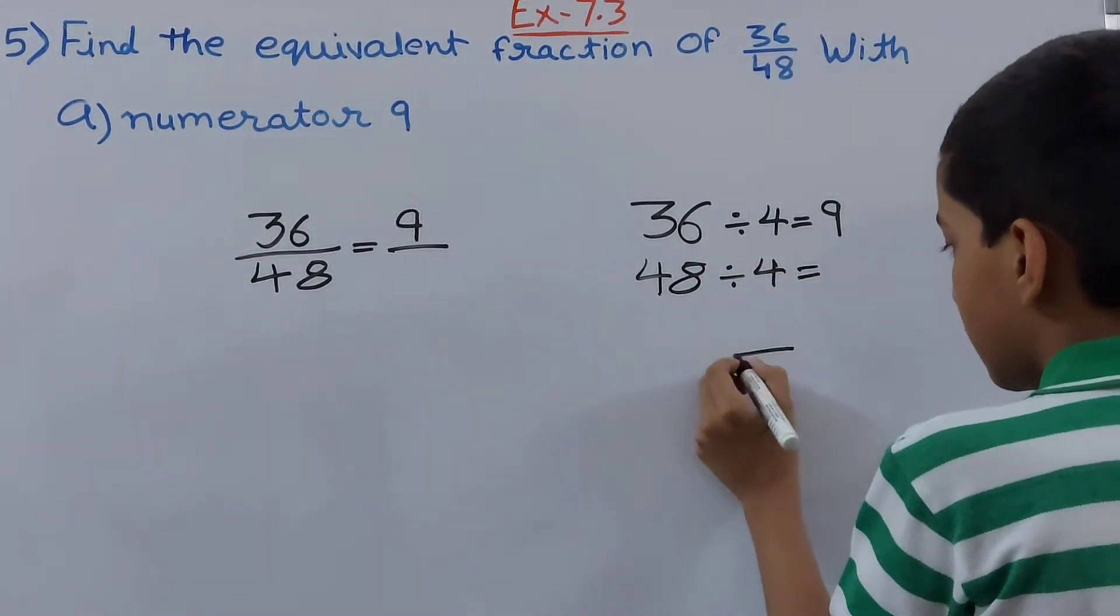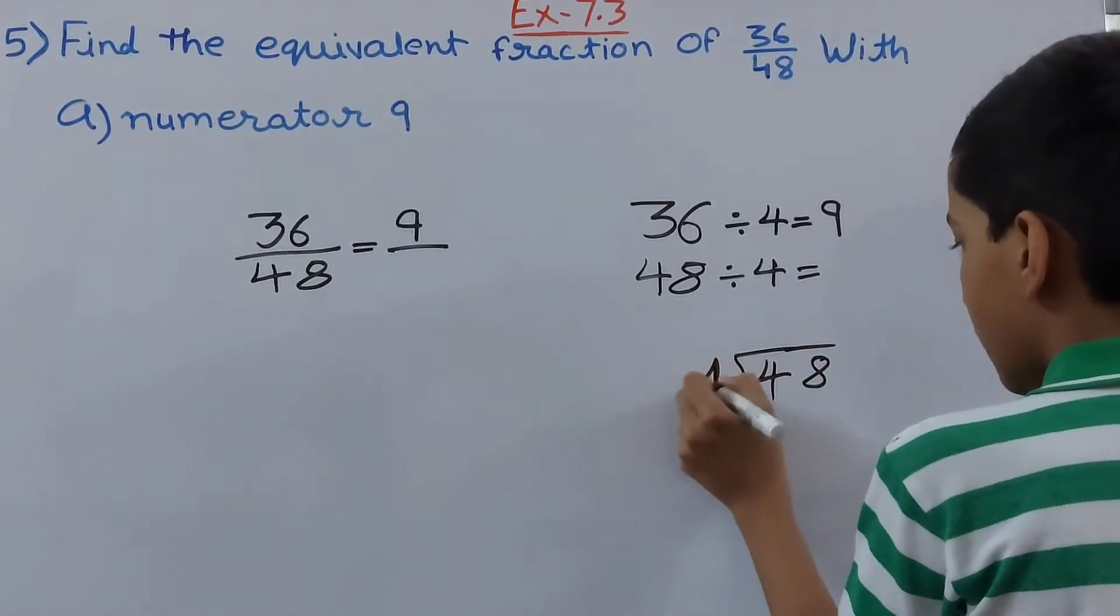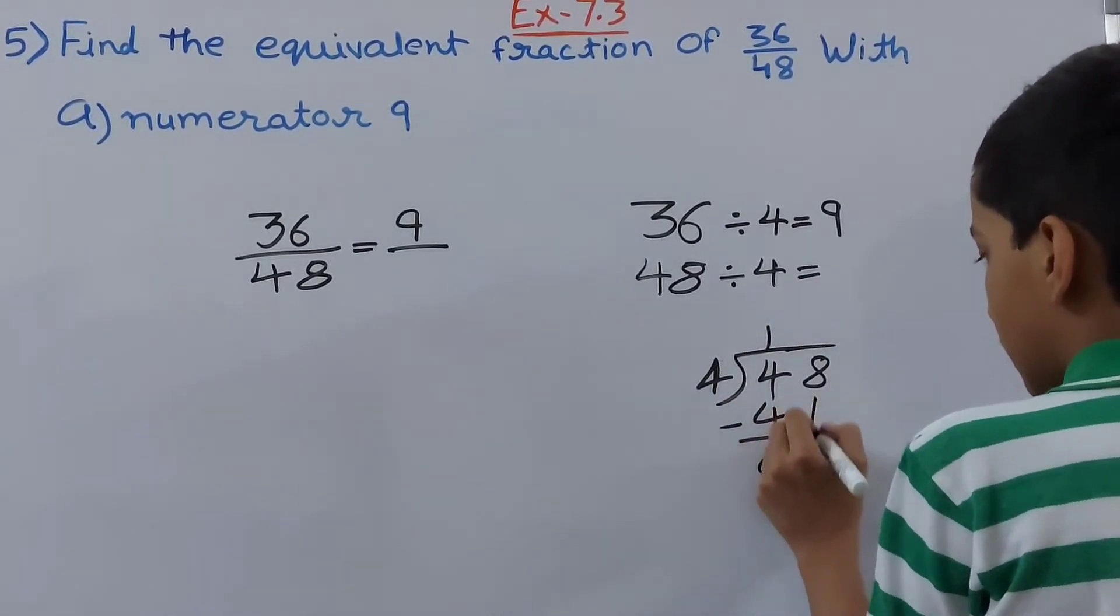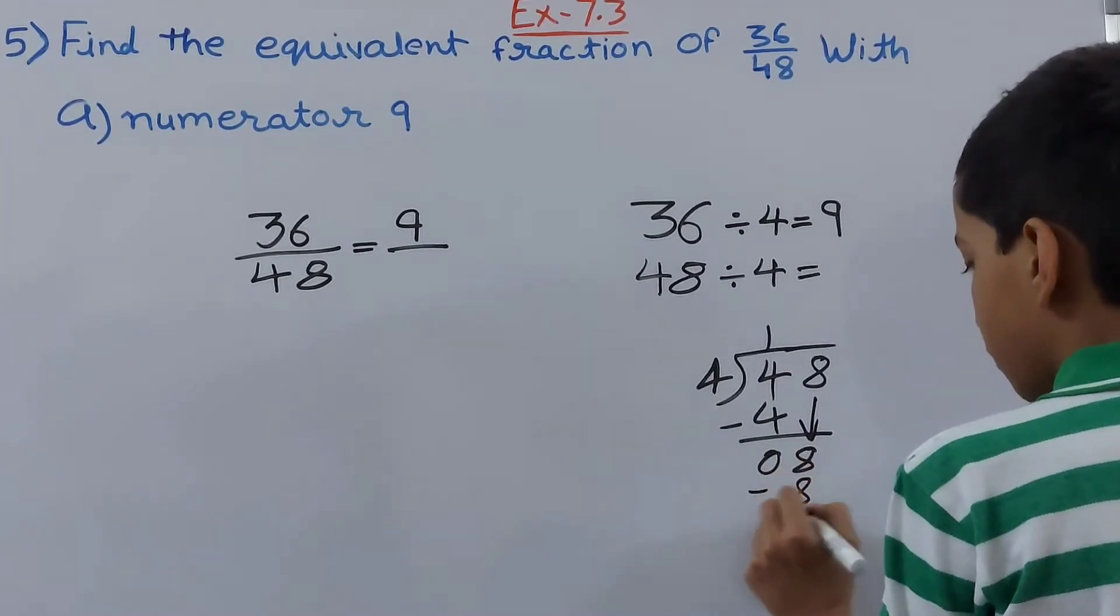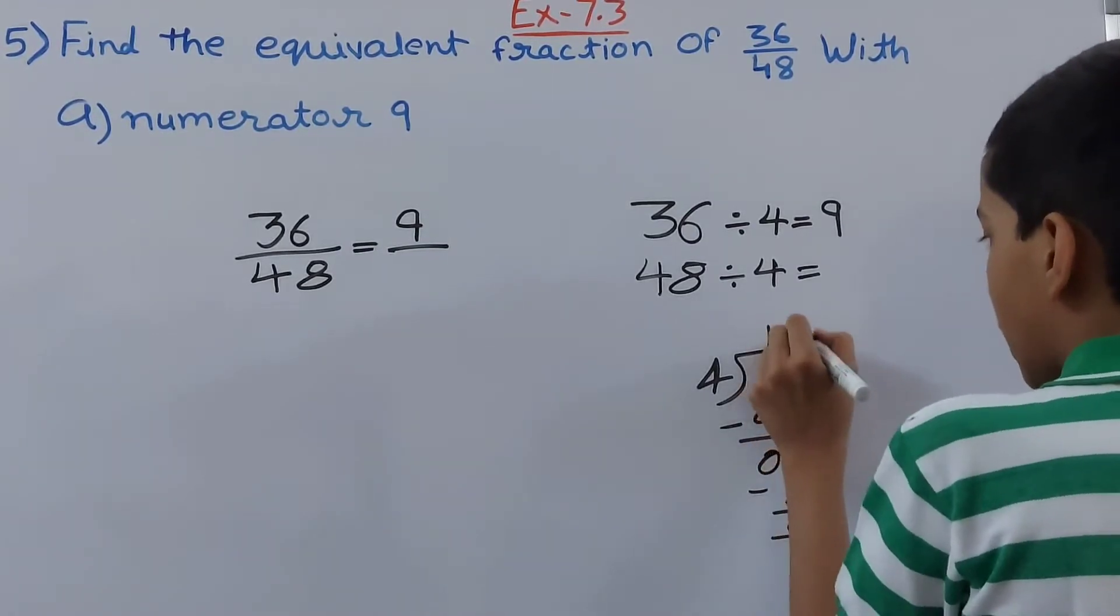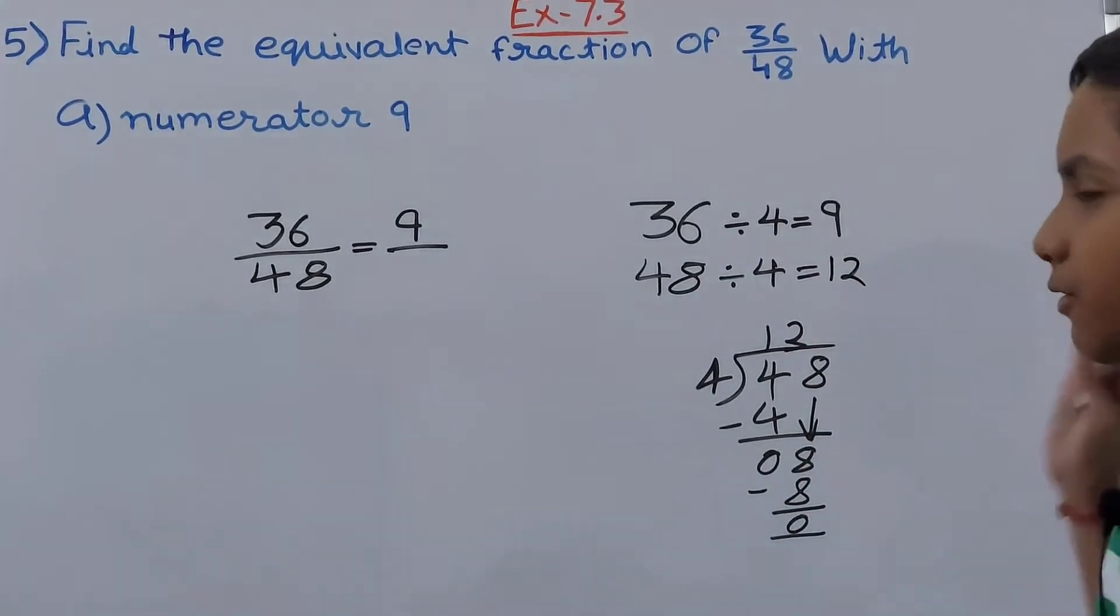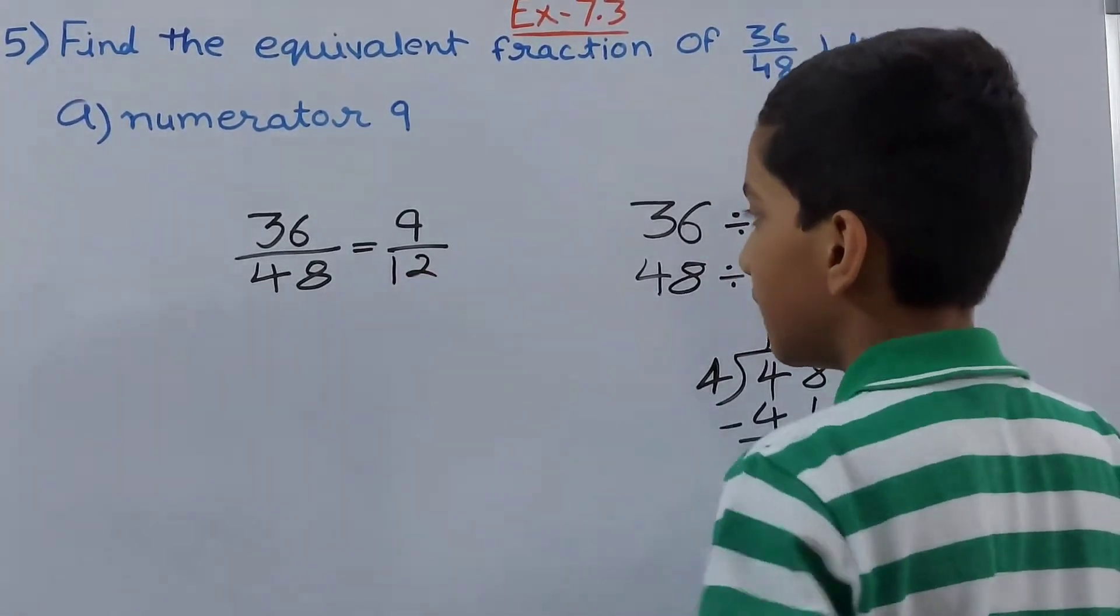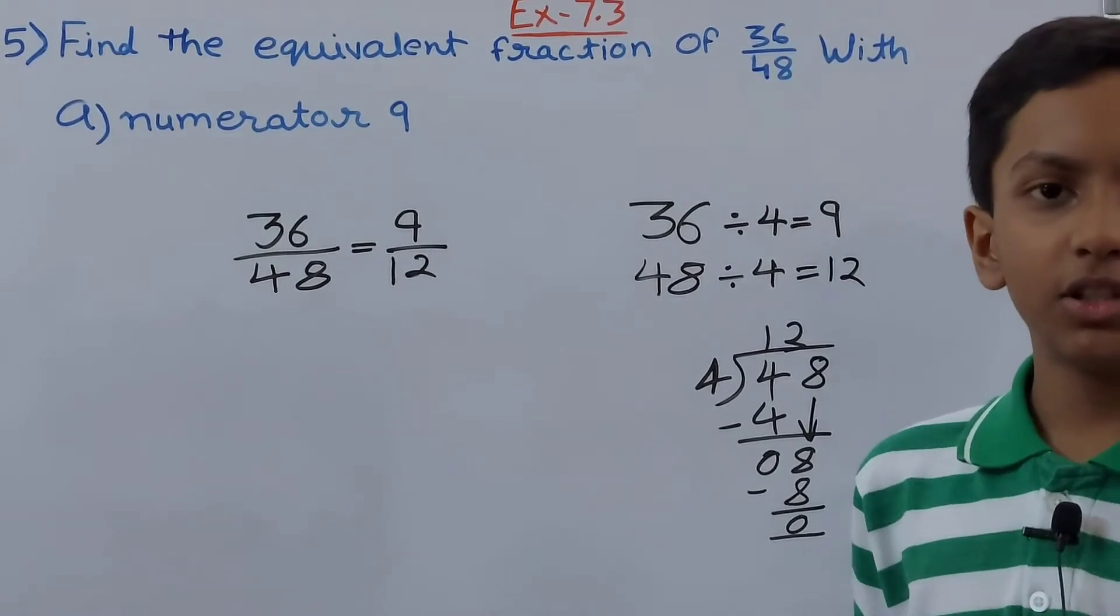Let us see what will we get here. 48 divided by 4. So 4 will go 1 time and then 8 will come down. Then we will multiply and it goes 2 times. That means 12 times, 48 goes by 4. That means our denominator will become 12 and the fraction becomes 9 upon 12.